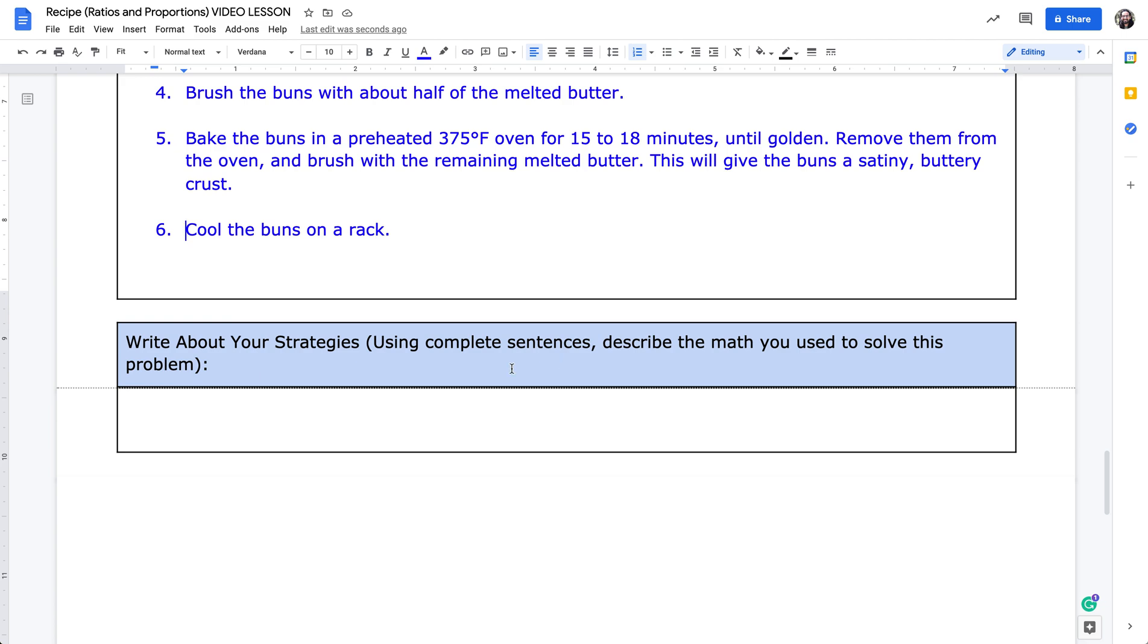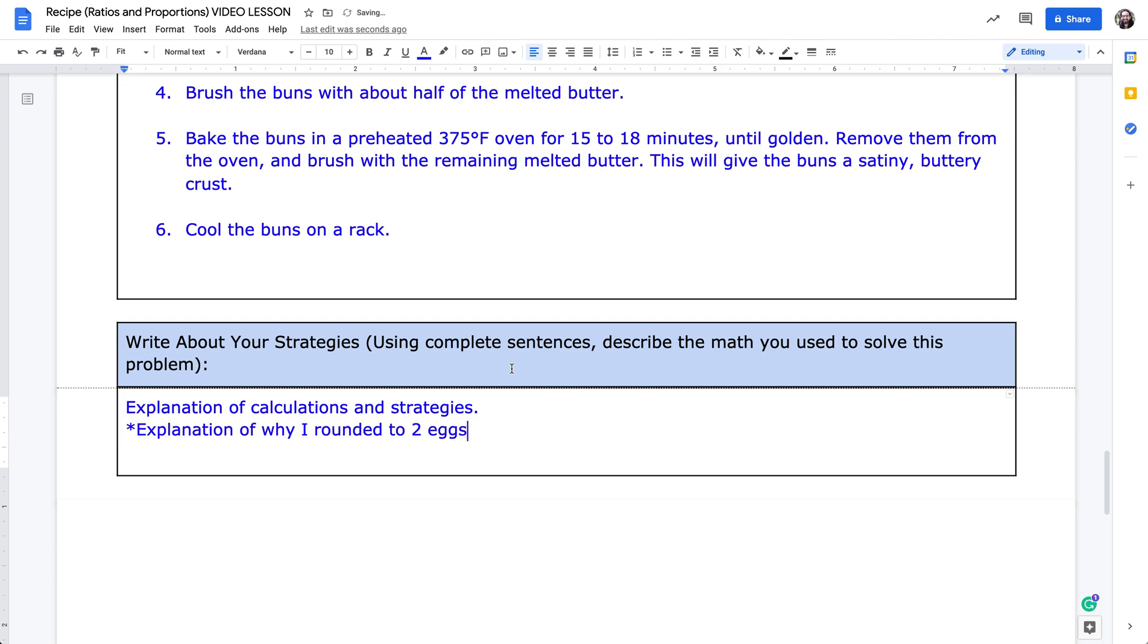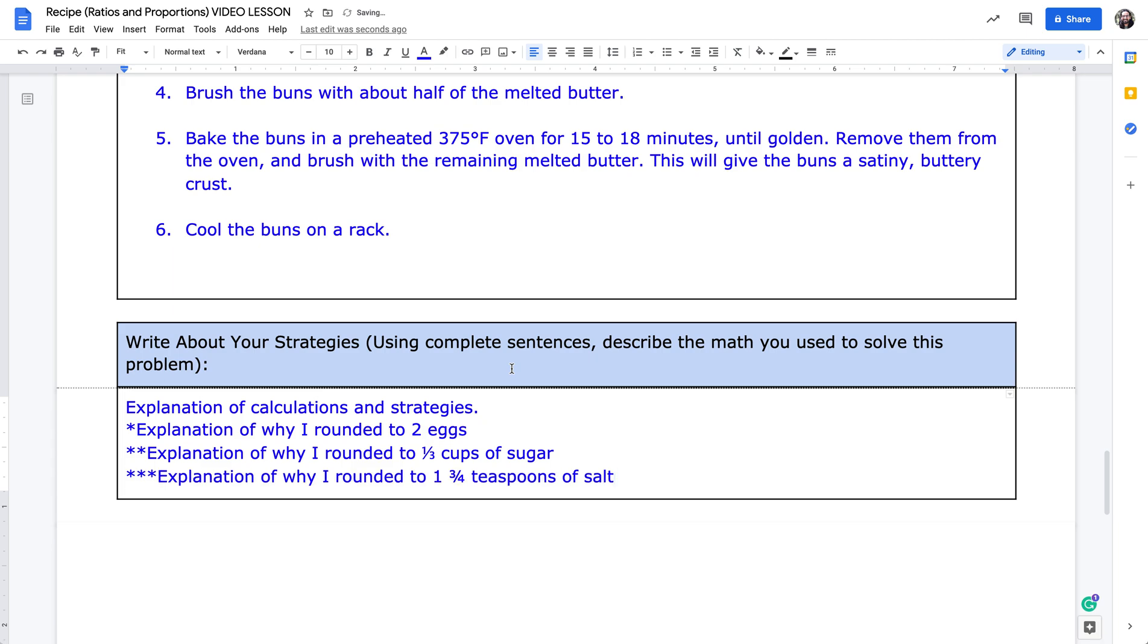I need to use complete sentences to describe the strategies or mathematical calculations that I used in the section above. I can also use the space to describe my justifications for rounding wherever I did need to round. So again, first I explain all of my calculations and strategies. I explain, in my case, why I rounded to two eggs. I would then explain why I rounded to one third cups of sugar. And I would lastly explain why I rounded to one and three fourth cups of salt.